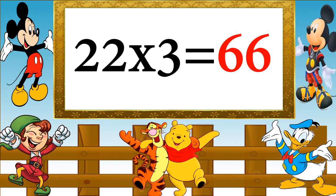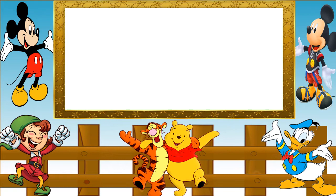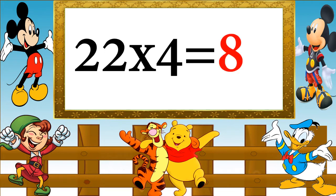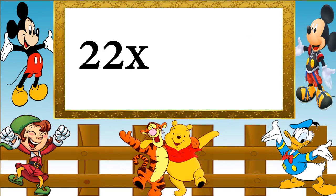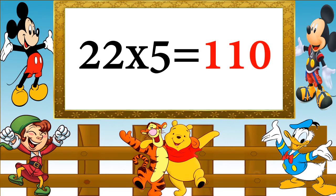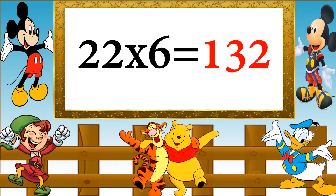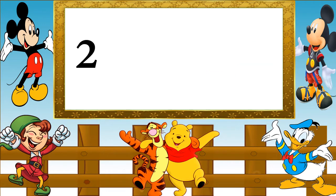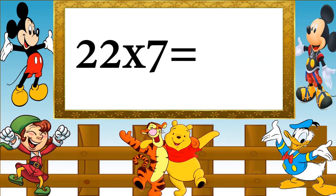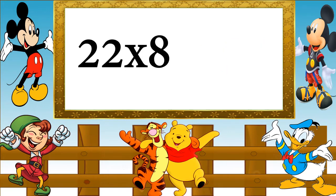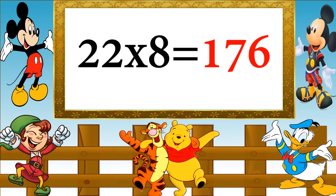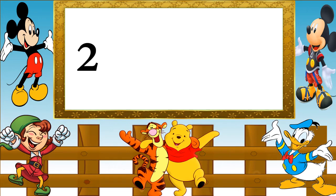22 fours are 88, 22 fives are 110, 22 sixes are 132, 22 sevens are 154, 22 eights are 176, 22 nines are 198, 22 tens are 220.